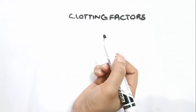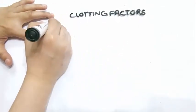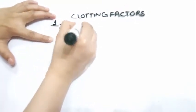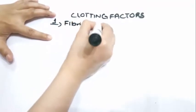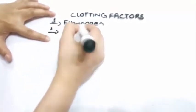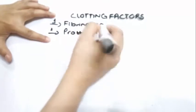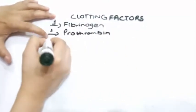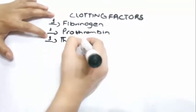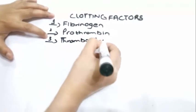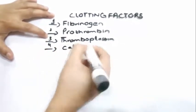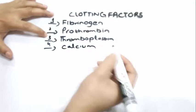In this video we will discuss clotting factors. Factor 1: Fibrinogen. Factor 2: Prothrombin. Factor 3: Thromboplastin. Factor 4: Calcium. Factor 5: